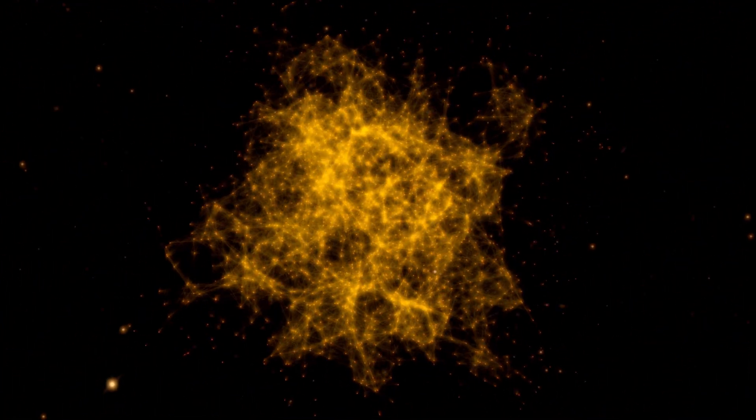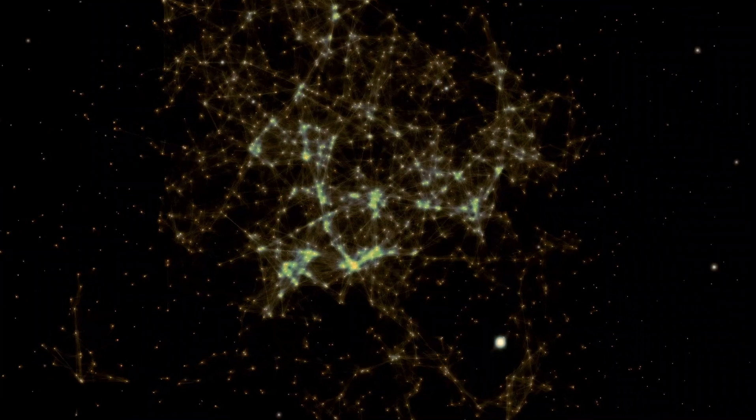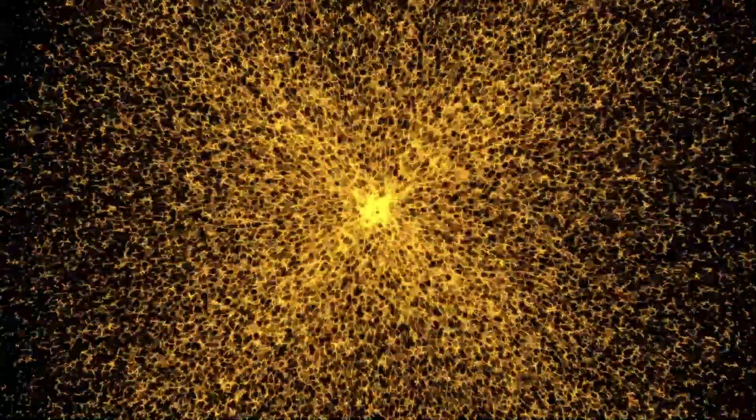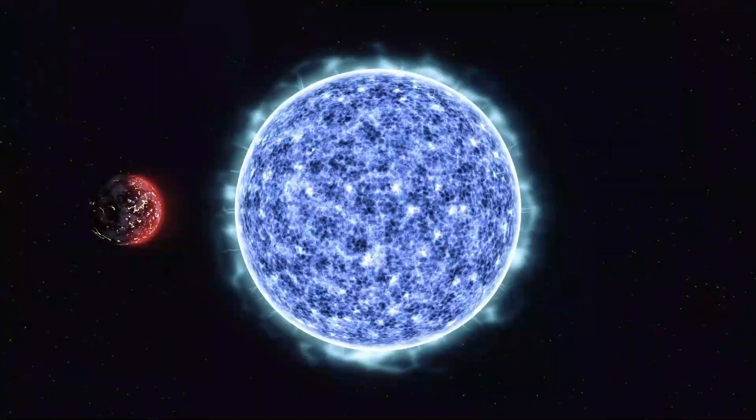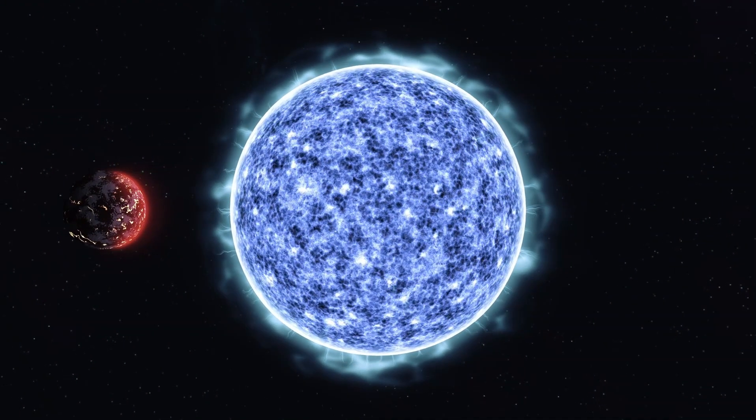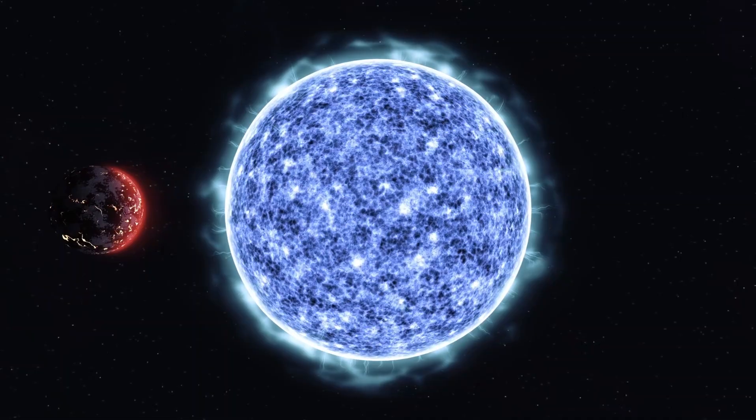The magnetic field on Betelgeuse is believed to be several thousand times stronger than the magnetic field on the Sun. This strong magnetic field causes gas on the surface of the star to become trapped in loops or arcs, creating regions of intense magnetic activity that are visible as dark spots.